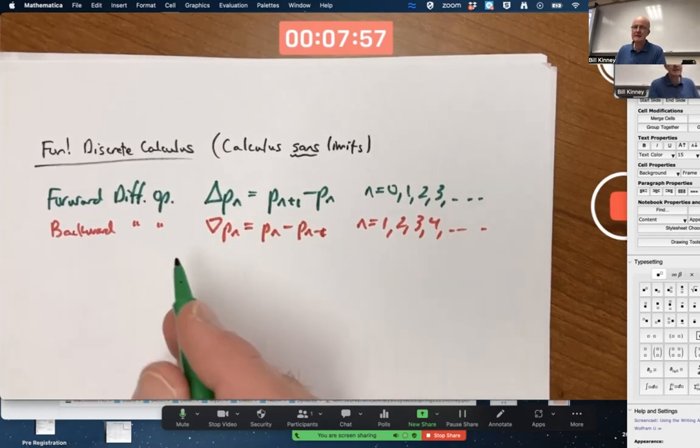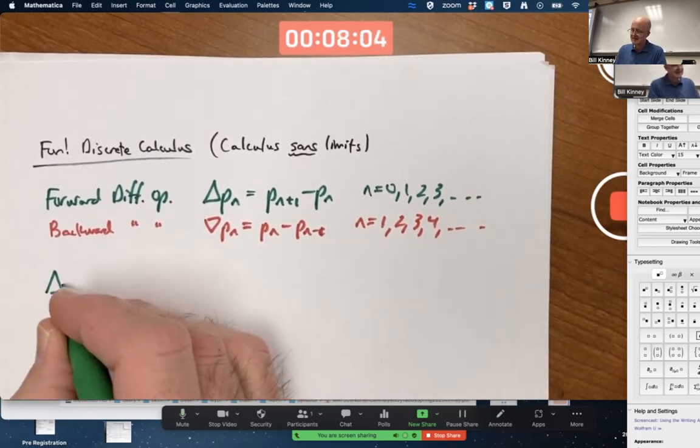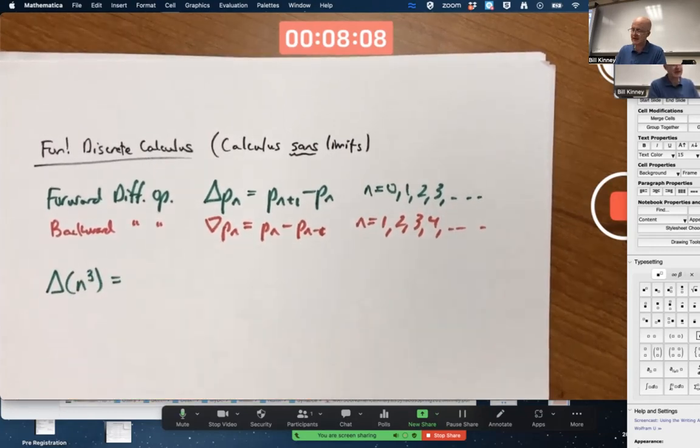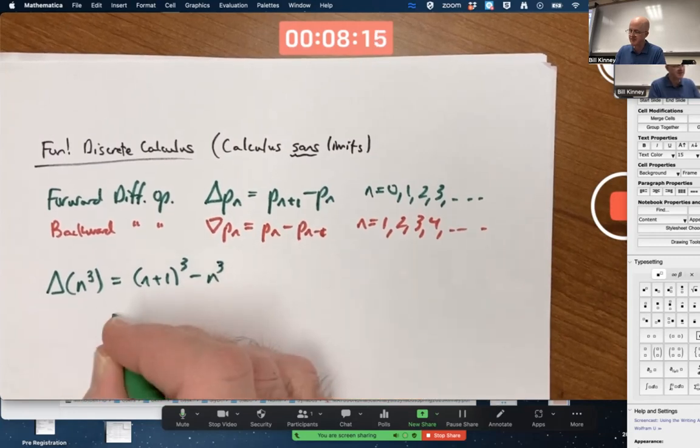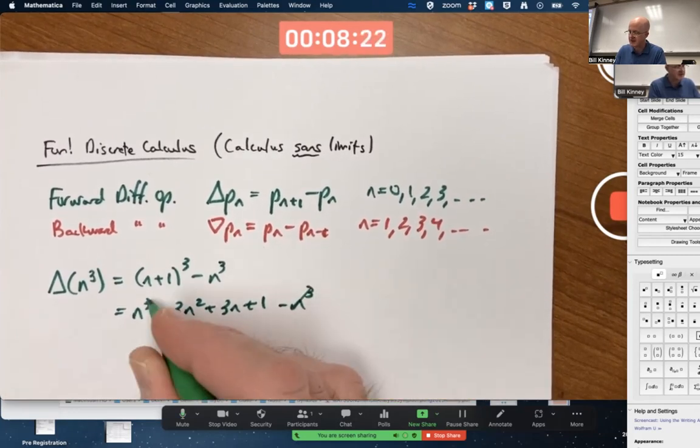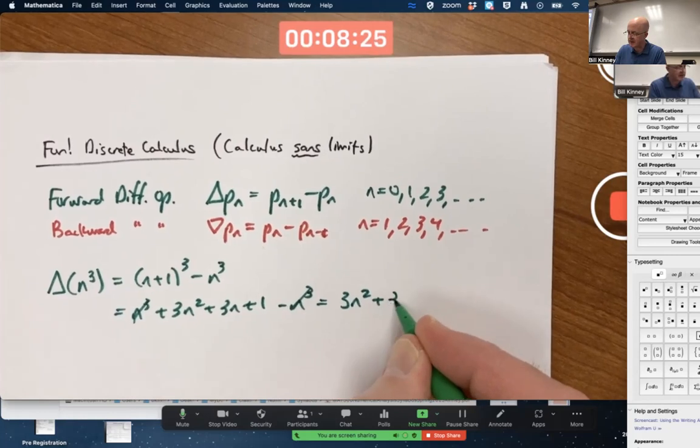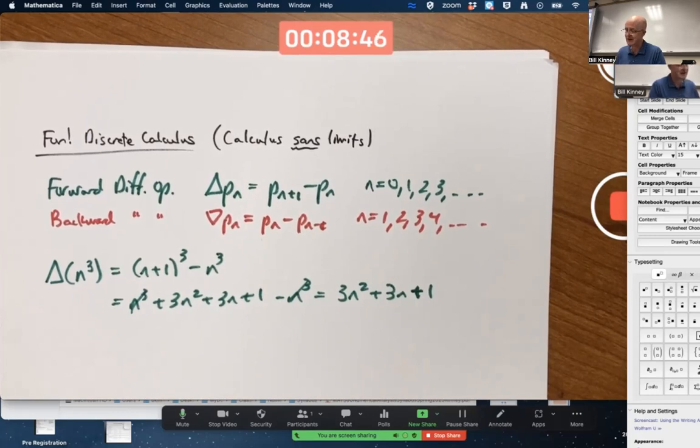Anyway, we talked last time about how these act like derivatives, and that, for example, you could compute the forward difference operator applied to N cubed and see what we get. And we did this last time, but let's do the calculation real quick again. You get (N+1)^3 minus N^3, expand that out with the binomial theorem, cancel the N cubes, and you're left with 3N^2 + 3N + 1, not 3N^2 as in calculus if N were a continuous variable and we were taking an ordinary derivative. But similar enough that it makes you happy, I guess, that it's acting kind of like regular, ordinary calculus.